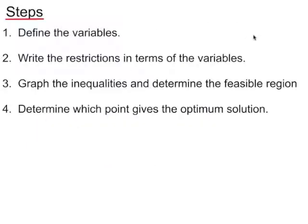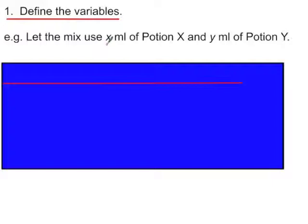So far we've been using a bit of a guess and check approach. For the rest of this lesson I'm going to work through a more systematic method, which follows these steps: firstly, defining the variables; then writing the restrictions in terms of the variables; graphing the resulting inequalities to determine the feasible region; and then determining which point in the feasible region gives us the optimal solution. We define X as the amount of potion X and Y as the amount of potion Y — note that lowercase x and y are the variables, while capital X and capital Y are the names of the potions.